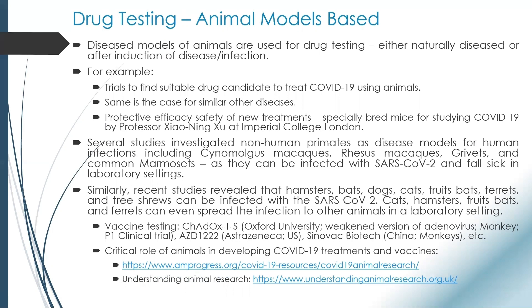Different non-human primates are used as disease models for human infections, for example various species of macaques. The vaccine developed by Oxford University is a weakened version of an adenovirus — keep in mind adenoviruses cause flu in chimpanzees — so a weakened version of that specific virus is used as a vaccine by Oxford University and they are conducting experiments and clinical trials on monkeys. Similarly, Sinovac Biotech, a Chinese manufacturing company, is testing their drugs on monkeys.